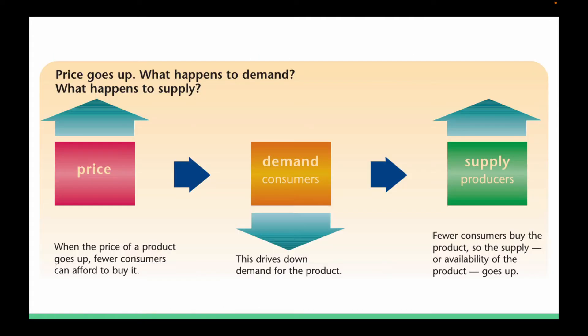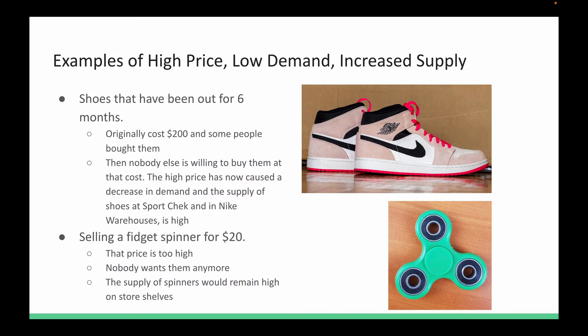So what happens when the price goes up? Fewer people are going to be able to buy it — they won't be able to afford it — which brings the demand for that product down. If demand decreases, the supply of that product is going to increase eventually. Examples of that are popular shoes that have been out for a while. Originally they may cost $200, but after about six months when styles change, people are not willing to buy them. So demand goes down, stock remains high, and the price eventually has to come down to meet the demand.